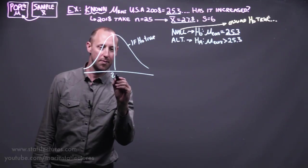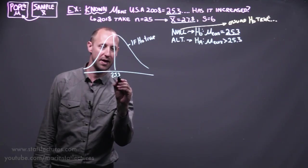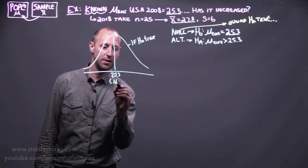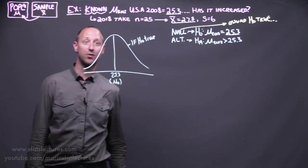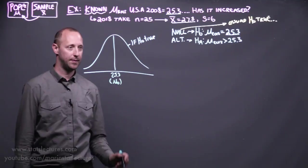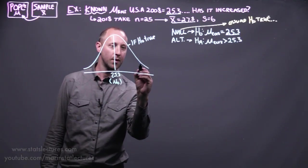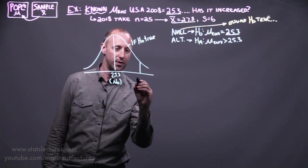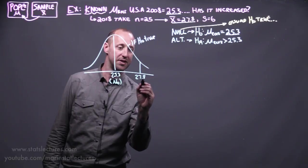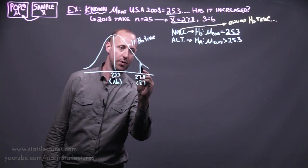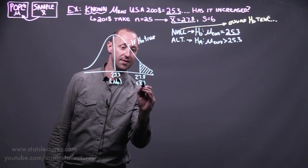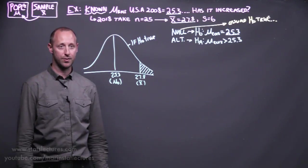If our null hypothesis is true, we expect our sample mean to be mu0, the hypothesized mean of 25.3. We ended up with a sample estimate of 27.8. We'd like to work out how likely was it to get this estimate, assuming our null is true.